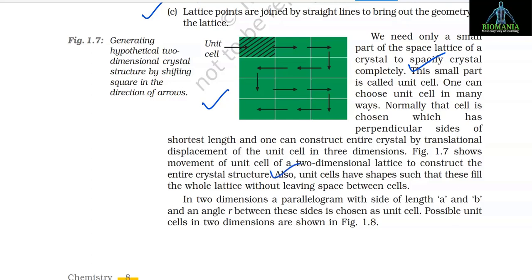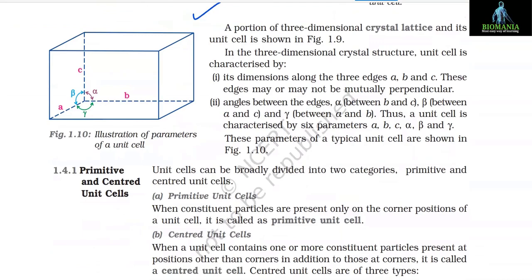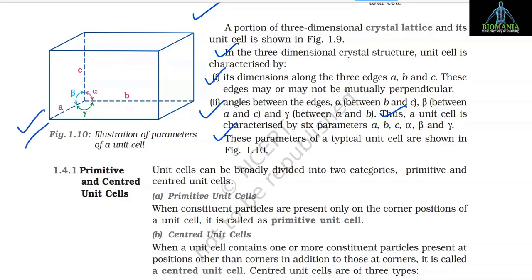The entire crystal can be constructed by translational displacement of the unit cell in three dimensions. Unit cells must fill the whole lattice without leaving space between cells. In two dimensions, a parallelogram with sides of length a and b and angle r between them is chosen as the unit cell. In three-dimensional crystal structure, a unit cell is characterized by: (1) its dimensions along the three edges a, b, and c; (2) angles between the edges — alpha (between b and c), beta (between a and c), and gamma (between a and b). Thus a unit cell is characterized by six parameters: a, b, c, α, β, γ.